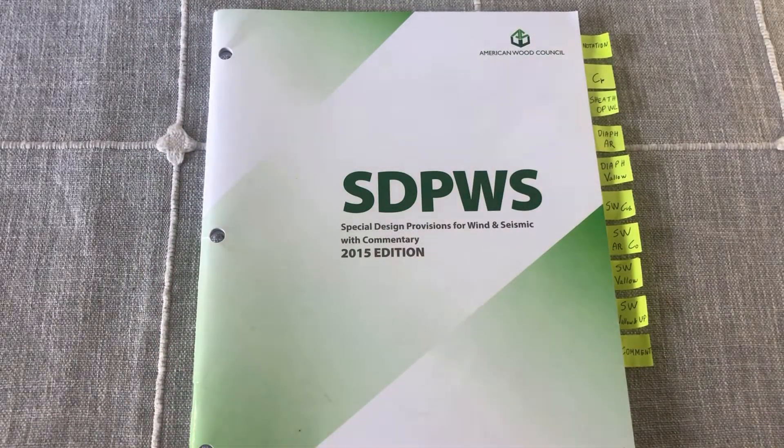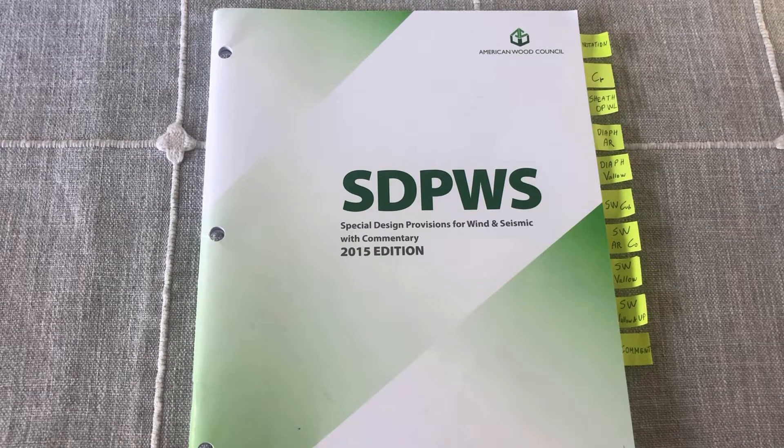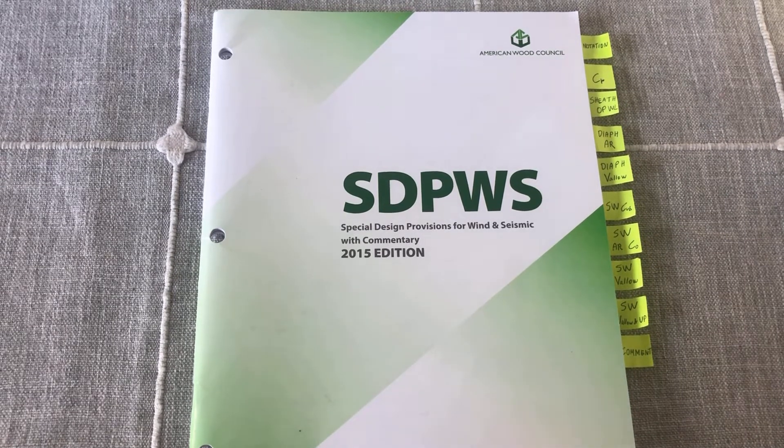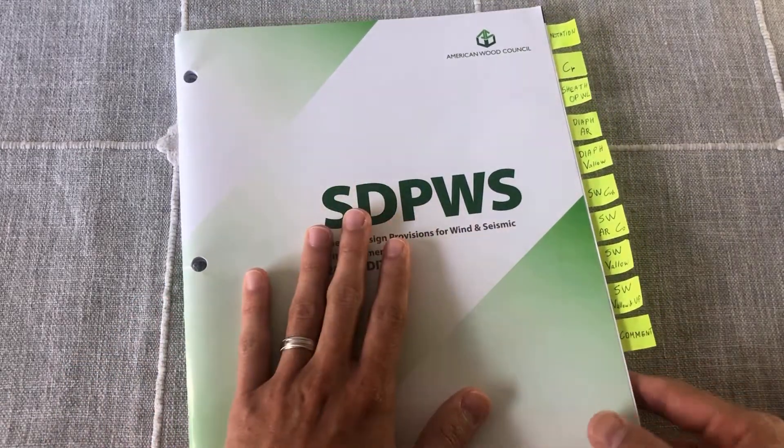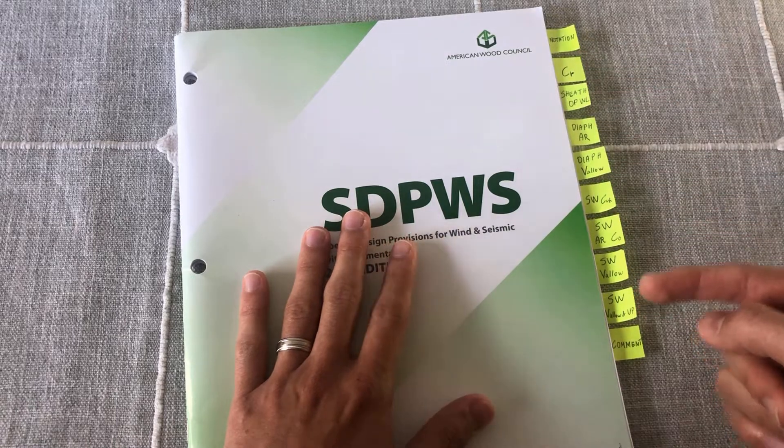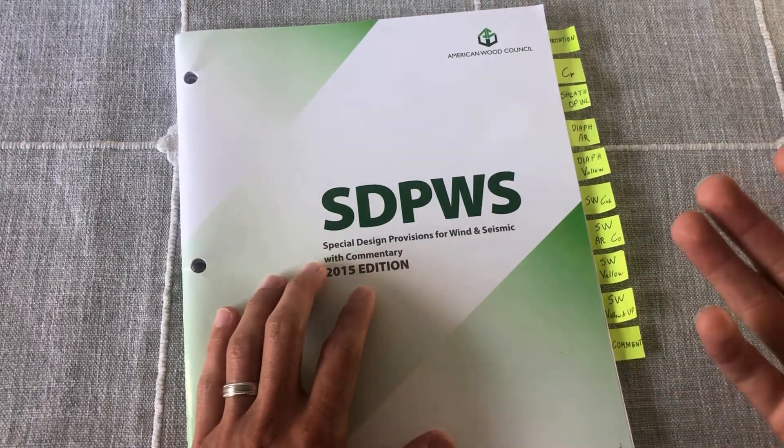In today's video we're going to cover the last one from this tabbing series on wood design, which is SDPWS - the Special Design Provisions for Wind and Seismic. For this one, it's a very short provision, so I'm just going to go over each tab from this provision and I hope you can benefit from it.